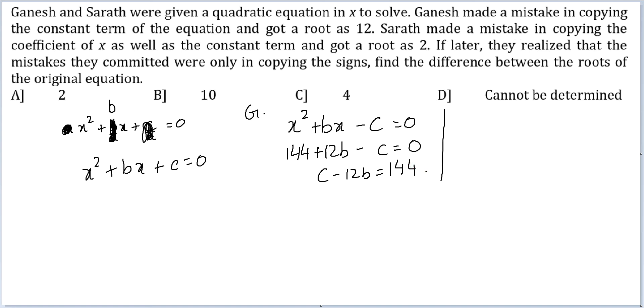What did Sharath do? He made a mistake in copying the coefficient of x as well as the constant term. So he got x squared minus bx minus c is equal to 0.